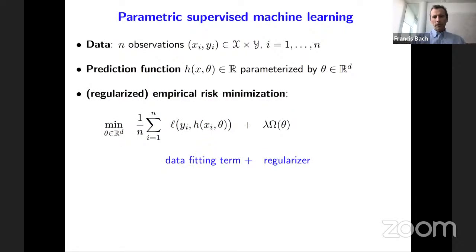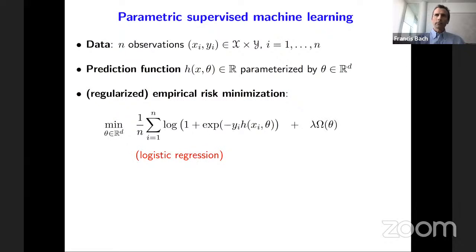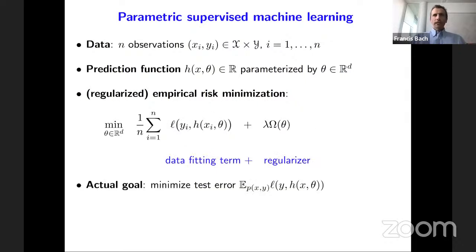The parameters of these networks are learned by minimizing a cost function called the regularized empirical risk, which includes a classical data-fitting term: the average loss between the target y_i and the prediction function. Common choices include least squares for regression, or logistic loss — which is convex in h and suited for binary classification with y_i in {-1, +1}. The goal is to minimize the training loss, but what ultimately matters is performance on unseen data — the expectation of the same loss over new data from the same source. So optimization is just a means to an end.